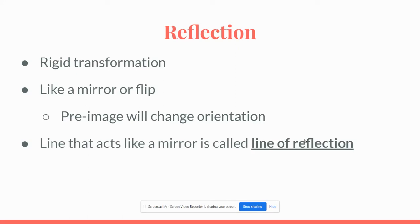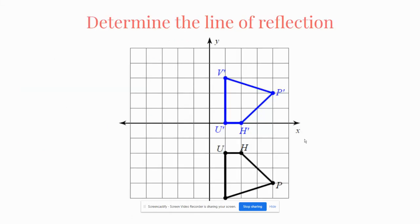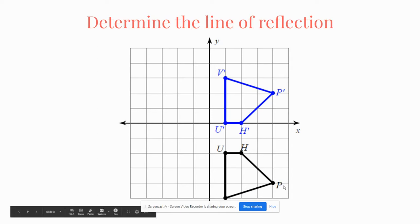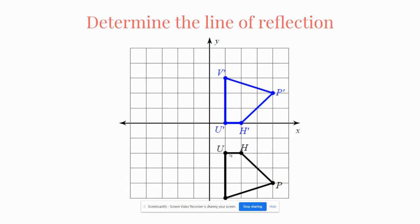The line that acts like a mirror is called our line of reflection, and that's what we're going to investigate today. Here is an image of a reflection with a pre-image and an image. The pre-image uses just the letters, and the image has that prime notation. Previously line segment U-H was at the top of the pre-image, but because it has been reflected, line segment U-prime H-prime is actually at the bottom of the figure. That's what we mean when we talk about changing orientation.